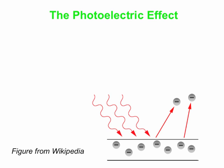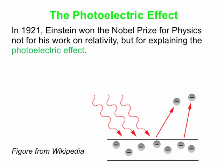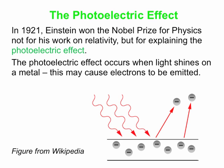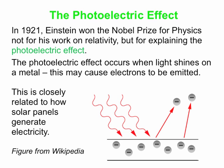Let's talk about the photoelectric effect. There's some history here: Einstein won the Nobel Prize in Physics in 1921, and it wasn't for his work on relativity but for explaining the photoelectric effect. The photoelectric effect occurs when you shine light on a metal surface, which may cause electrons to be emitted — the squiggly lines in the picture represent light coming in, and a couple of electrons are being knocked out. By the way, this is closely related to how solar panels generate electricity; a photovoltaic panel works on a very similar principle.